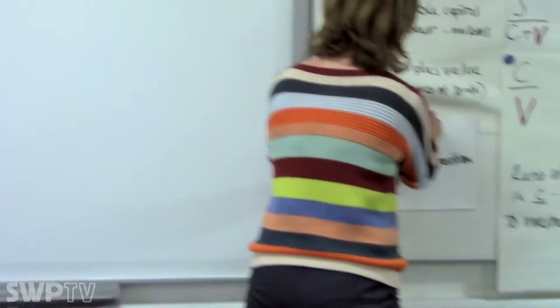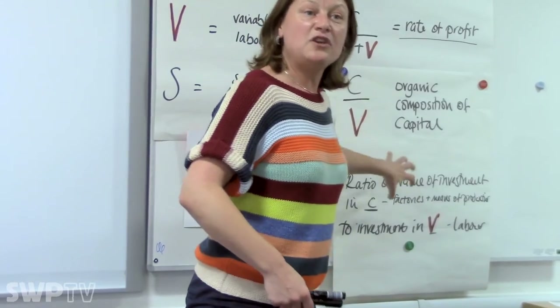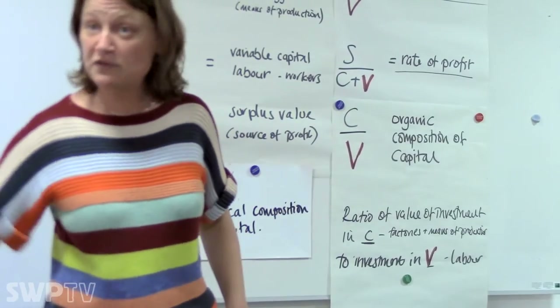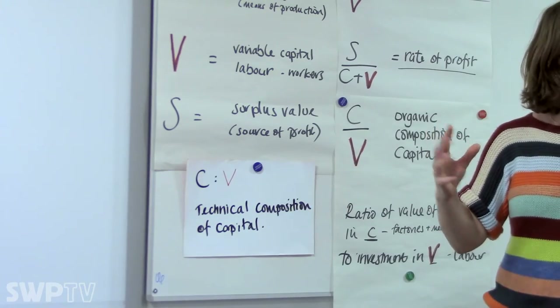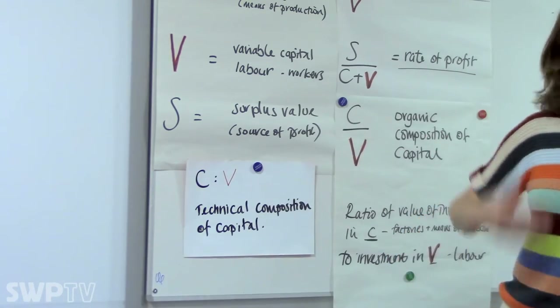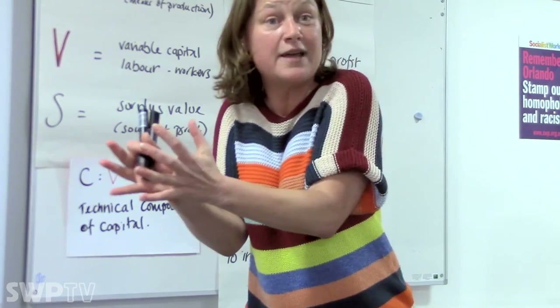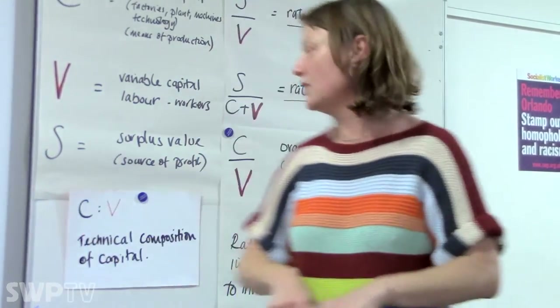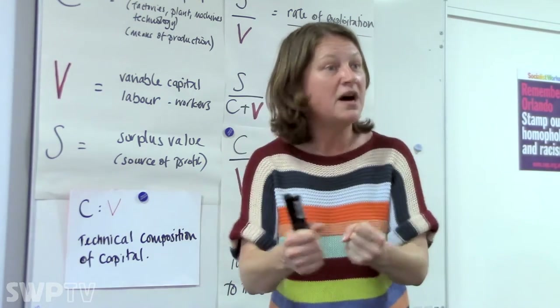Therefore what Marx says is that at the heart of the system — at the heart of capitalism — is the tendency for the rate of profit to fall. There is also the organic composition of capital, which is the ratio of value of investment in C to investment in V, in labor. Whenever you have an increase in the organic composition of capital, you have a tendency of the rate of profit to fall. This is different from the technical composition of capital, which is literally the physical ratio of capital to labor. The organic composition of capital is really what is very important to understand.